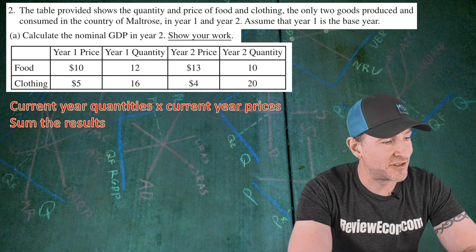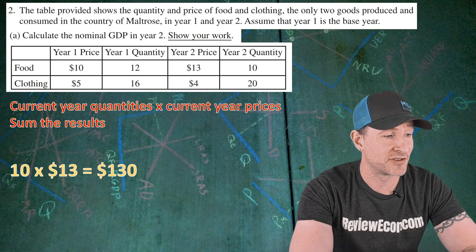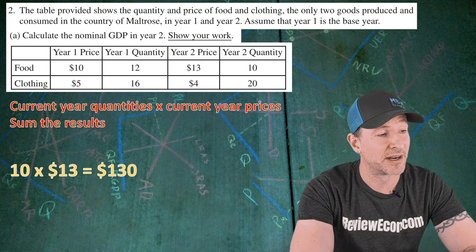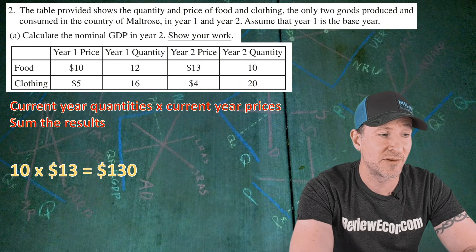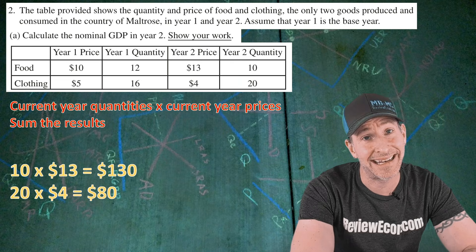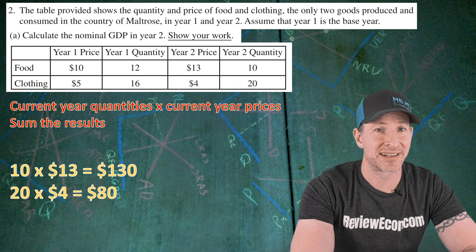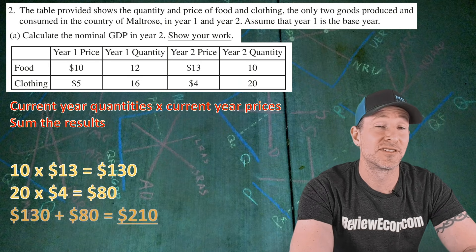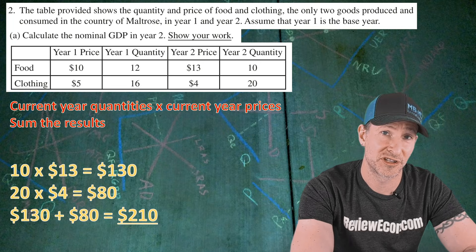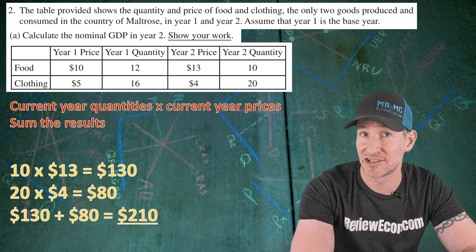For year two, we have 10 units of food and the price of food is $13 — that's $130 worth of food. When it comes to clothing, we have 20 units at $4 each, that's $80 worth of clothing. Add those together and we have $210 worth of nominal GDP for year two. If you show all that math, you get your first point.